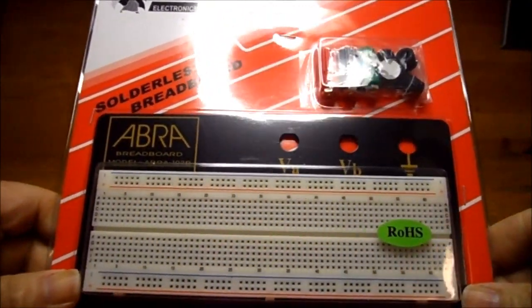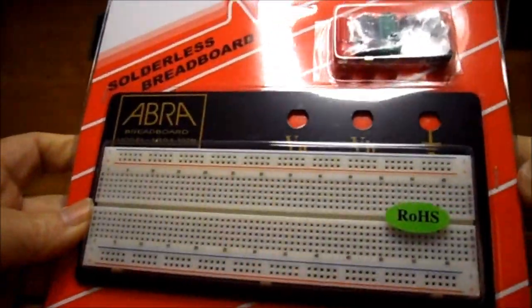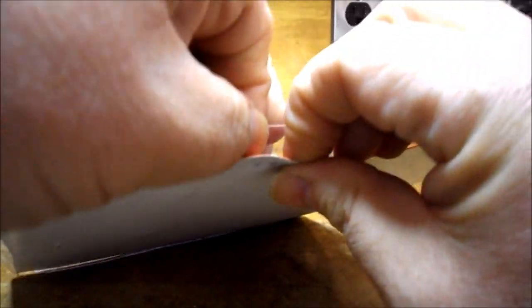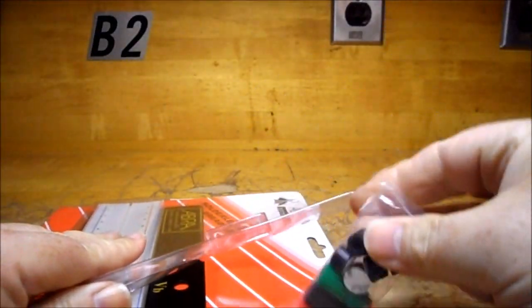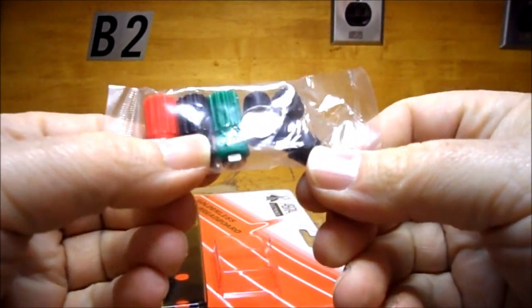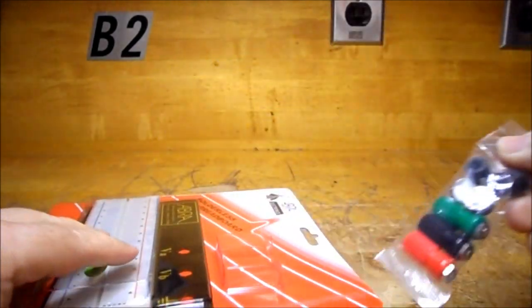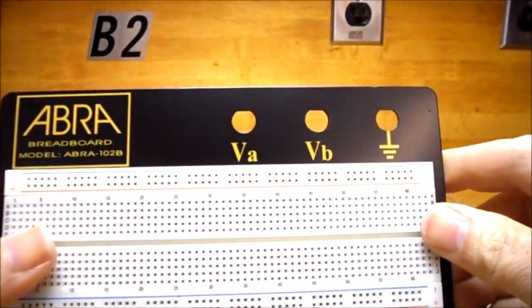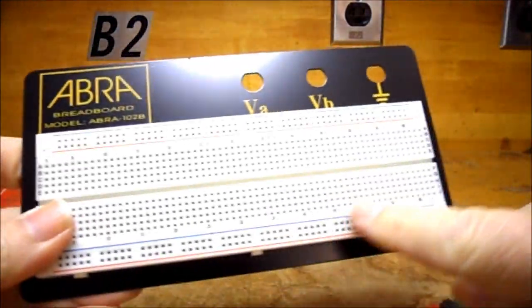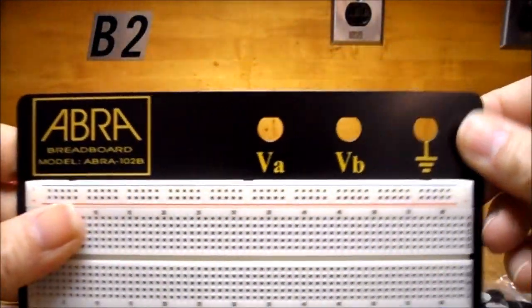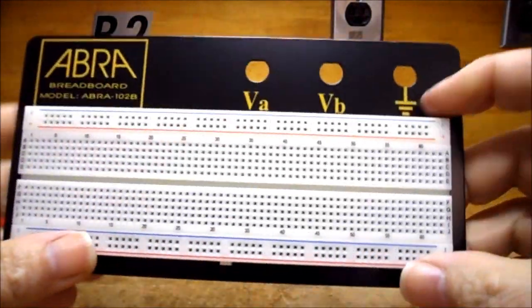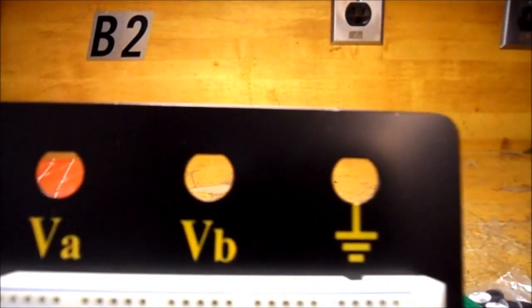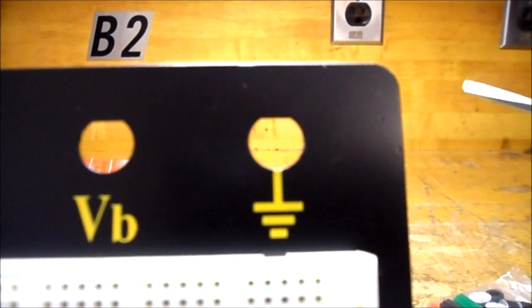This is how your breadboard comes and you can see it's stapled shut, so the first thing we need to do is open up these staples. There's your package with your binding posts and rubber feet to go on the bottom. And there is the breadboard. This is the breadboard and this is just a little metal base for you to put your binding posts on.